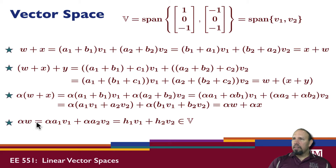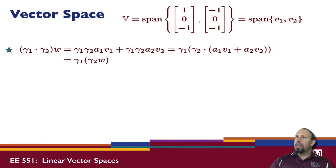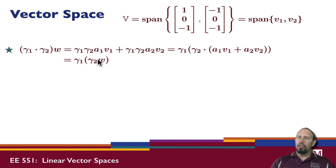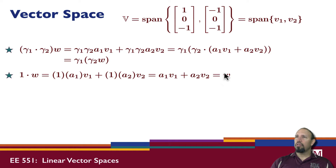If I take a constant alpha times a vector W: H1 = alpha·A1 and H2 = alpha·A2. Since alpha is complex and A1, A2 are complex, the result is complex, so the scaled vector is also in the vector space. For two constants: I can show that gamma1·(gamma2·W) equals (gamma1·gamma2)·W. And for the identity: 1·A1·V1 + 1·A2·V2 = A1·V1 + A2·V2 = W.